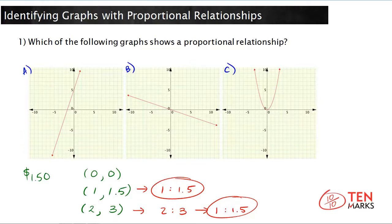So let's look at the first example. Here's the origin, and this is a straight line, but the line doesn't pass through the origin. It's above it. So no, this is not a proportional relationship.